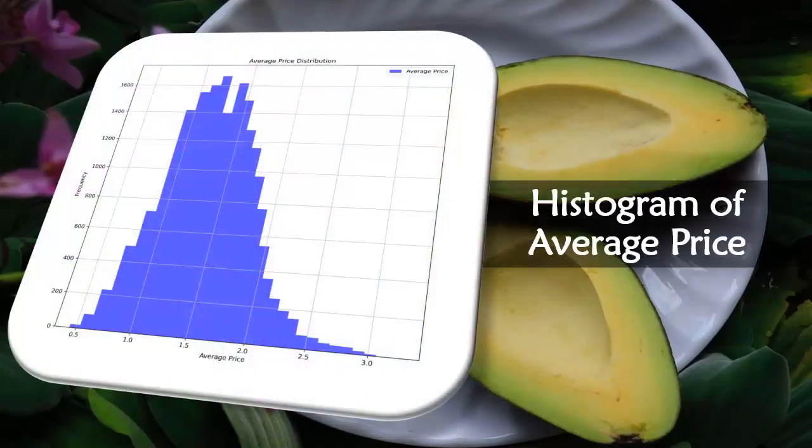The figure here is the histogram for average prices of avocado. Clearly the histogram shows that the distribution of average prices is somewhat positively skewed.